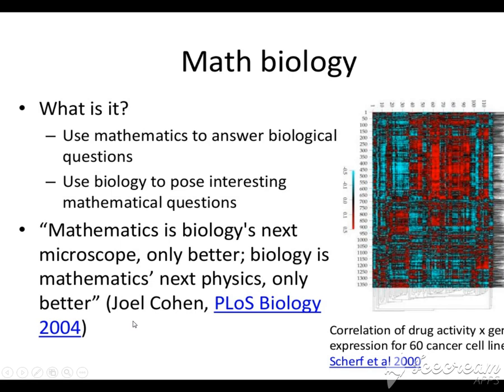This is a quote by Joel Cohen. He was a scientist who said mathematics is biology's next microscope — meaning biophysics and all the branches of science, what is mathematics, can explain in a better way.